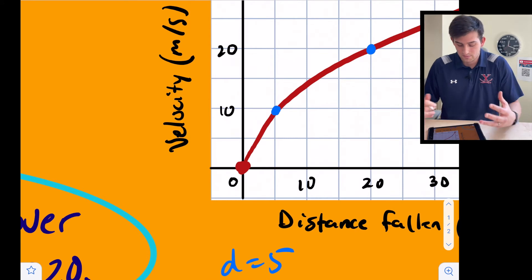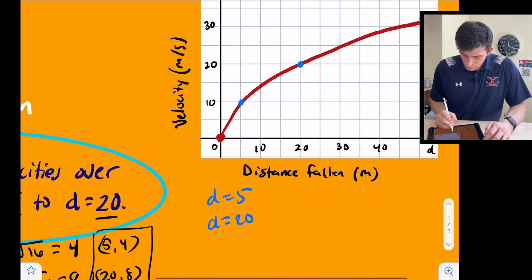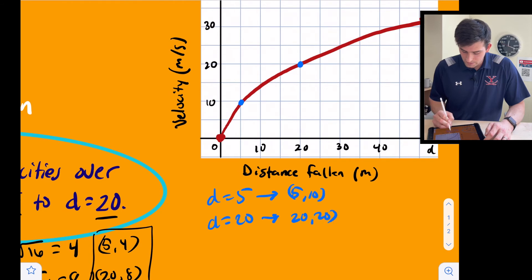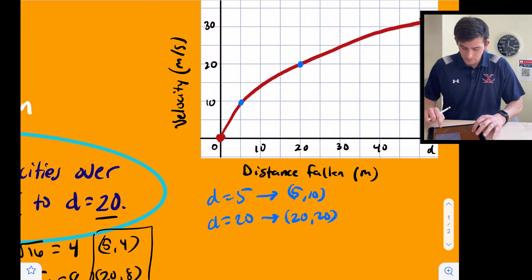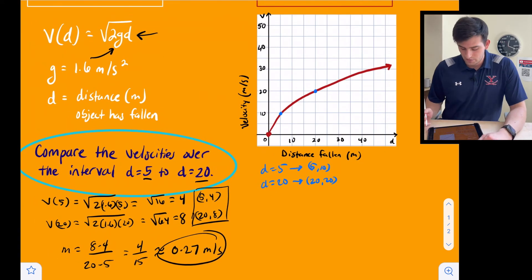What we see are two points that have a nice intersection. When d is 5, that's the point 5 comma 10, and when d is 20, that's the point 20 comma 20. Now we can do just like we did with the equation and find our slope between those two points.